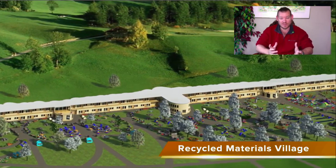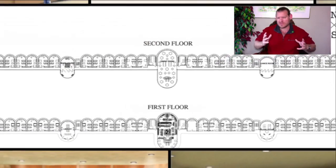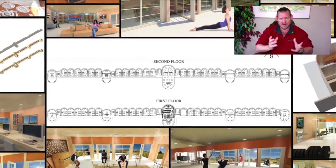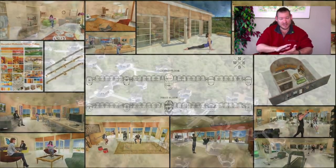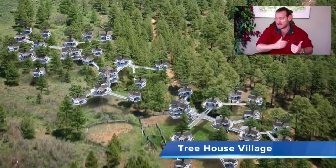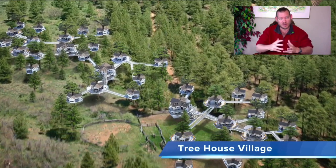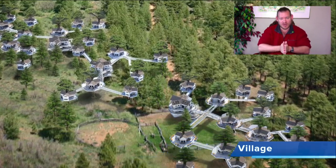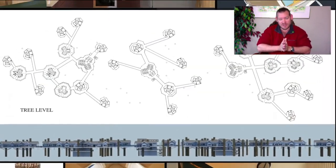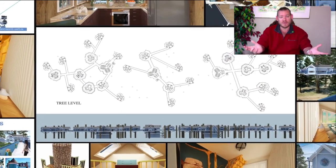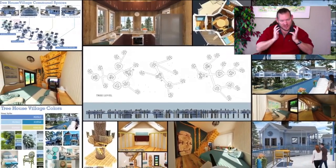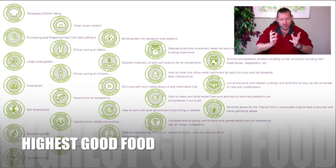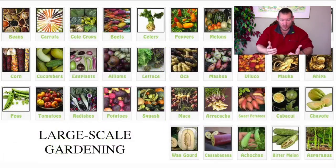If you run the numbers on what we're doing and imagine 50 people coming together and creating One Community — which is what we're doing — we're building all the open source tools, tutorials, resources, plans, and everything needed for this open source community ecology model. We're putting it all together so it's easily accessible in web format, video format, and downloadable PDF format for people who won't have internet access. One Community is a place people can visit from anywhere in the world, experience what we're creating, and if they like the open source community ecology model, replicate it on their own wherever they want, joining a global cooperative working together for the highest good of all life on this planet.